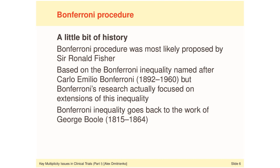We are going to take a look first at the Bonferroni procedure and begin with a little history. The Bonferroni procedure is one of the most popular multiplicity adjustments, mainly because it has been around for a very long time. It was most likely proposed by Sir Ronald Fisher. Although the Bonferroni inequality is named after the Italian mathematician Carlo Emilio Bonferroni, his research actually focused on refining this inequality. The actual inequality used in the Bonferroni adjustment dates back to the work of the British mathematician George Boole.